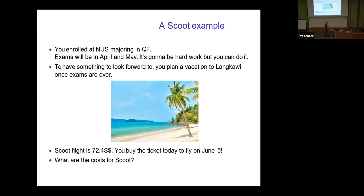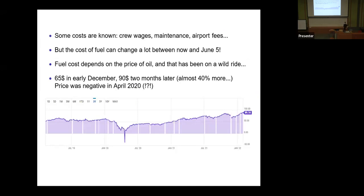I've been monitoring a little bit the flight prices, and yesterday a one-way ticket to Langkawi was $72.40 Singapore dollars — that's Scoot. Now, how does Scoot choose such a price? Clearly it depends on demand, but they also have costs and need to make sure they will make money. Some costs are very easy to calculate — the cabin crew, the pilot, plane maintenance, airport fees. These they can already estimate for June. But there are also costs that are unknown, and the main one is fuel.